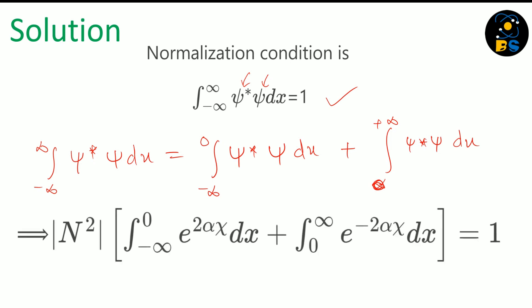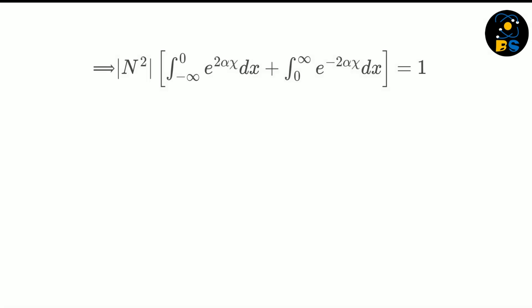After substituting the values, for minus infinity to zero we have e raised to plus alpha x times e raised to plus alpha x, giving e raised to 2 alpha x. For zero to infinity we have e raised to minus alpha x times e raised to minus alpha x, giving e raised to minus 2 alpha x.